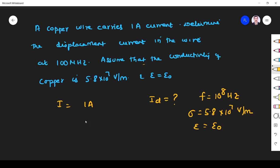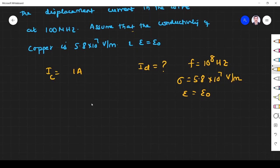These are the things given. What I have to find is Id. Copper is a conductor, so current flowing through a conductor is conduction current Ic. Now we know that the ratio between conduction current density and displacement current density...